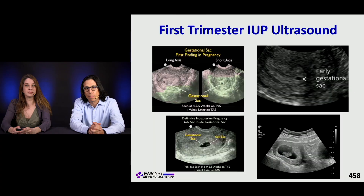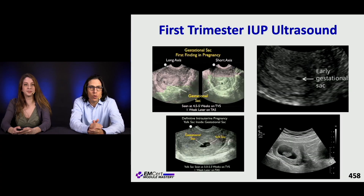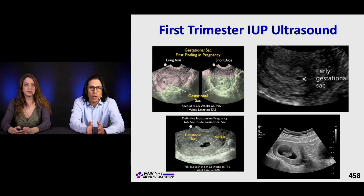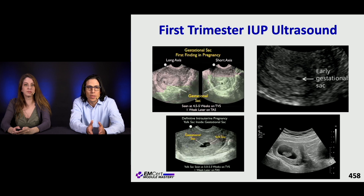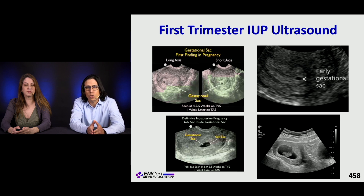We've covered non-pregnant vaginal bleeding, now let's talk about vaginal bleeding in pregnancy. This is a first trimester ultrasound. The first finding in pregnancy is a gestational sac, which can be seen at four to five weeks on a transvaginal ultrasound and about a week later on a transabdominal ultrasound. For a definitive IUP, you need a yolk sac inside the gestational sac, seen at five to five-and-a-half weeks on transvaginal ultrasound.